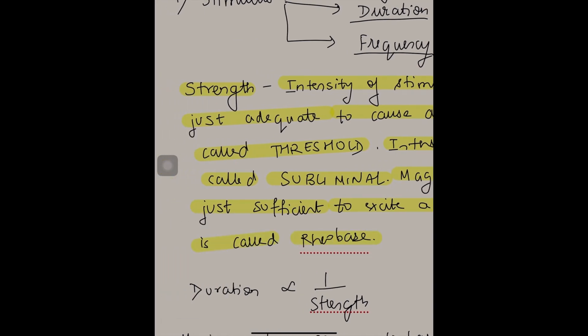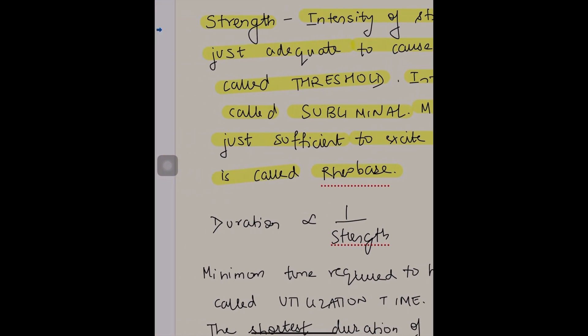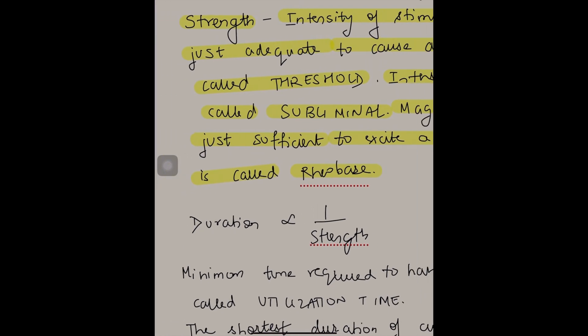So in strength of stimulus, you have to define three things: threshold, subliminal, and rheobase. Now let us go to the second factor affecting excitability in stimulus. It is duration.